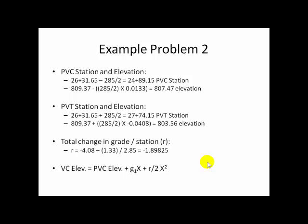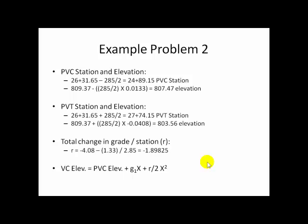So the values of X that we plug into the equation will not be so neat. In fact, here is the computation for this particular curve. You can see the PVC, the PVI, and the PVT listed down the left side. And instead of computing every 100 feet, we wanted more detail. So we have shown elevations every 25 feet as well. Notice that the X value at the PVT is 2.85 feet.